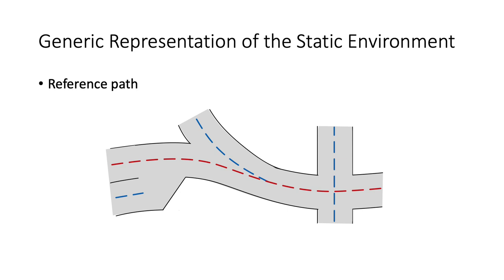We'll first look at static representation. In order to extract generic representation of static environment, we first introduce the concept of reference path, which usually can be obtained from road centerline, and the reference paths are typically defined by polynomial curves.